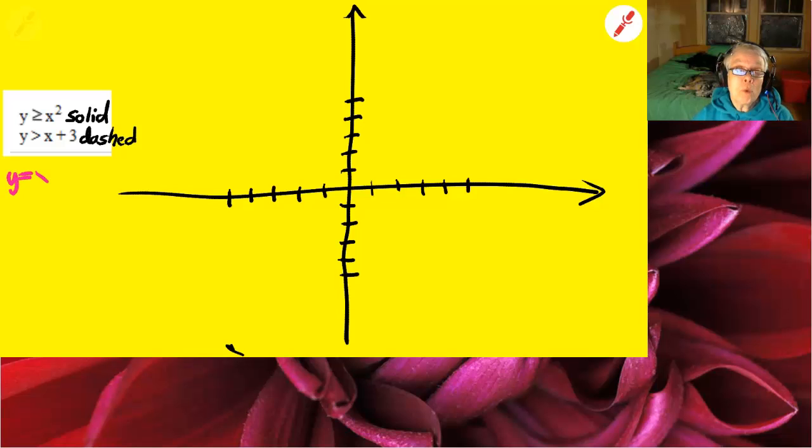Now I'm going to graph y equals x squared. That will give me the border of the parabolic inequality, which is just a fancy way of saying the nonlinear inequality. There we go. As I try desperately to make a good graph, the left side looks okay. There. It's okay.